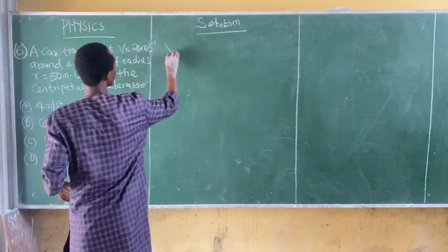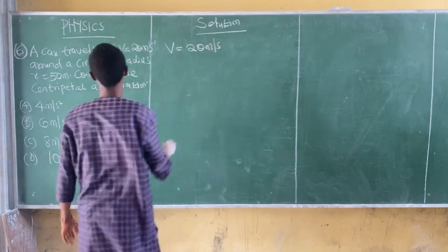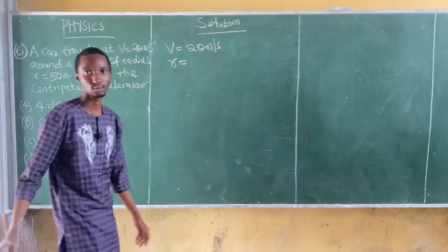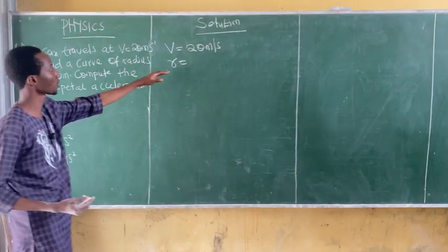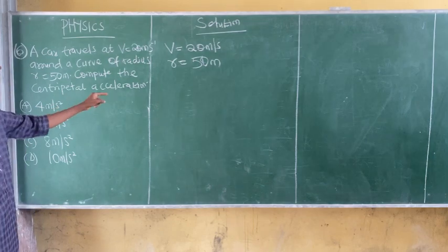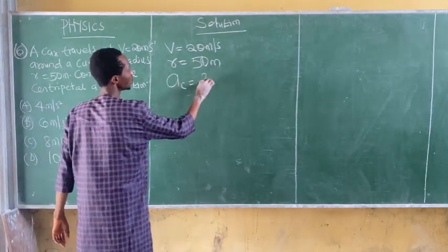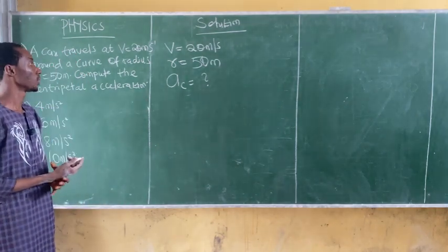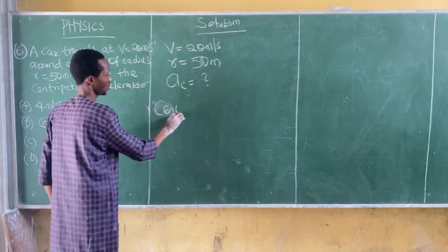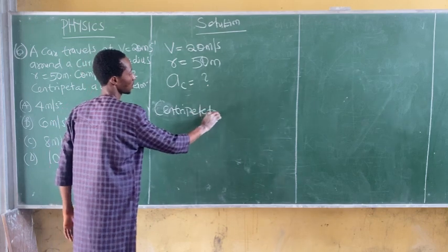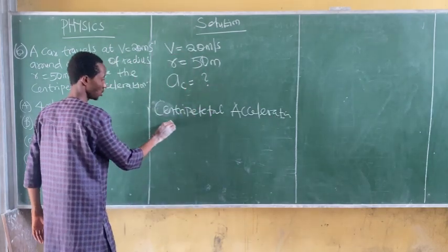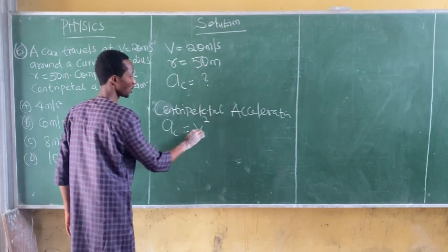We have velocity V equal to 20 meters per second. We are also given the radius R to be 50 meters. We need to compute the centripetal acceleration AC, which is unknown. Recall that the centripetal acceleration AC is given by the formula V squared over R, where V is the velocity and R is the radius.